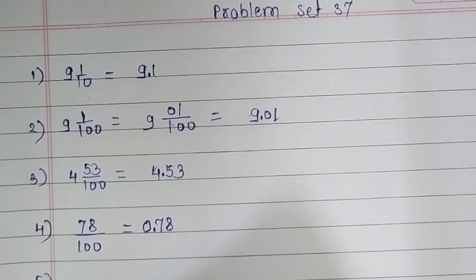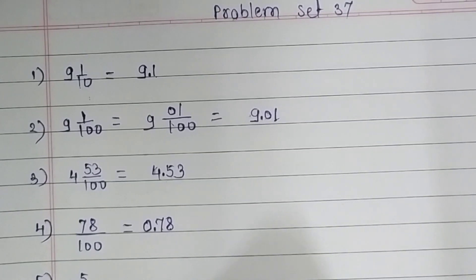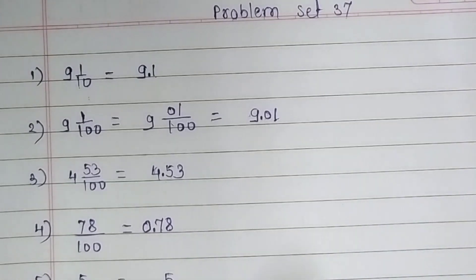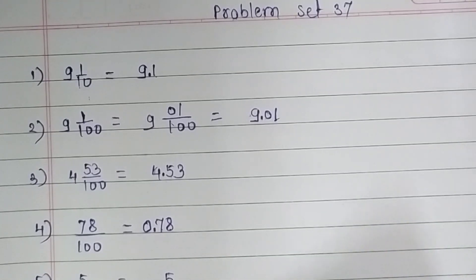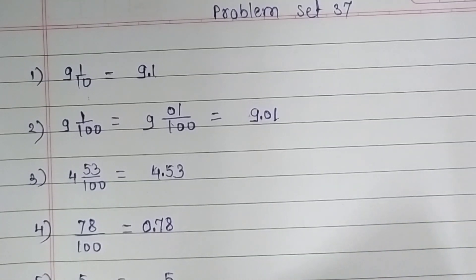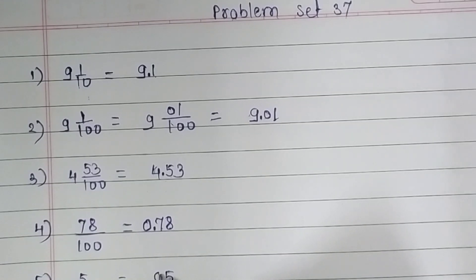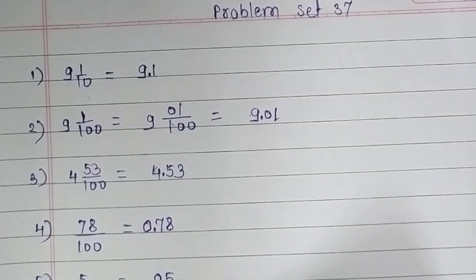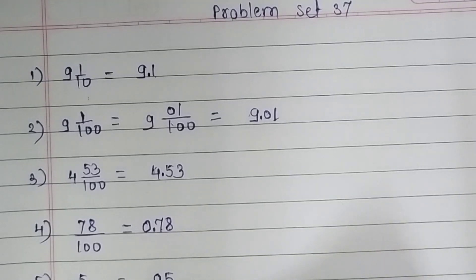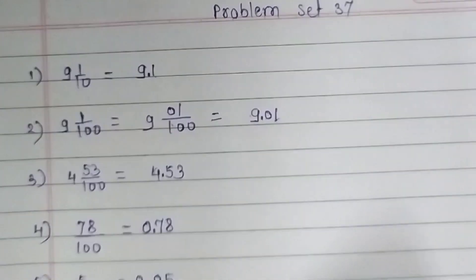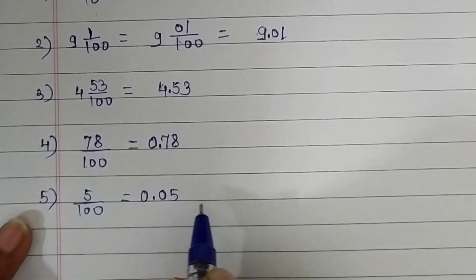Now the fifth question is 5 upon 100. Here we have two zeros, so we move two places from our right side. For the second place — the tenths place — we write 0, then place a decimal point. Now the fraction is 0.05.